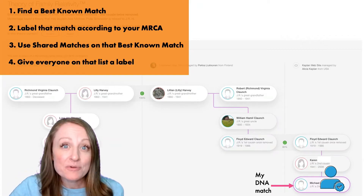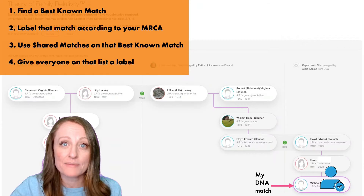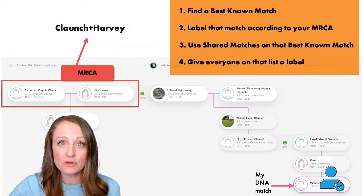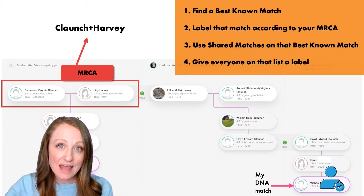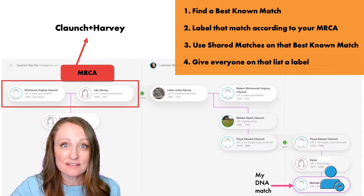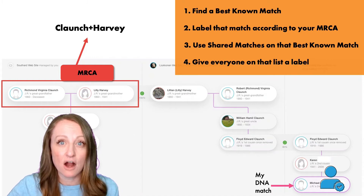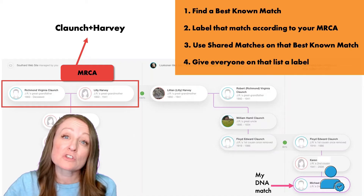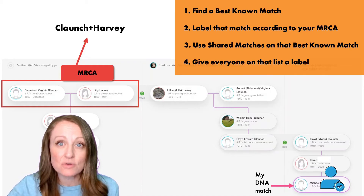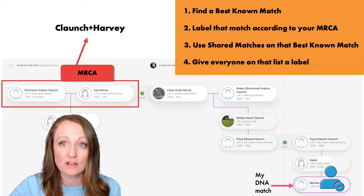Now we want to label that match according to our MRCA. MRCA stands for Most Recent Common Ancestor — it's the couple that connects us with our match Michael. In this case, the couple's names are Richmond Virginia Clonch, who married Lily Harvey. So when I label this match, I'm going to label them with the two surnames of the ancestral couple that connects us — I'm going to label this match as "Clonch Harvey."